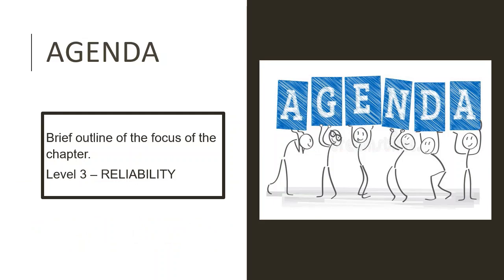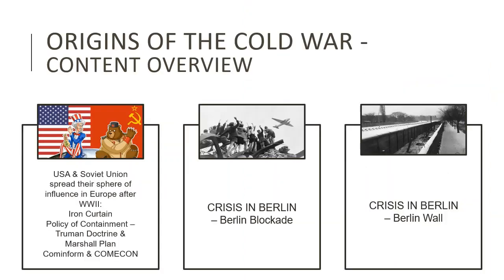Let's start by briefly taking a look at everything we are going to cover in today's lesson. Firstly, I'm going to give you a very brief outline of the origins of the Cold War and what content you should focus on when preparing for the section. Then, for the rest of the lesson, we're going to revise your source-based skills, with our focus being on Level 3 Reliability Questions and how to answer them.